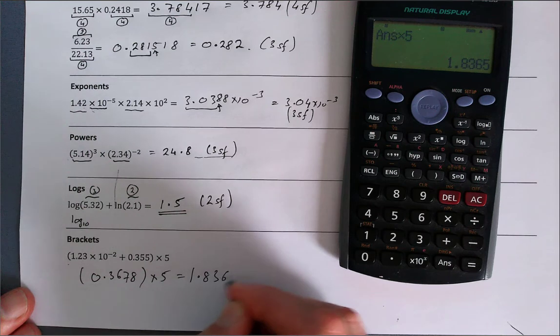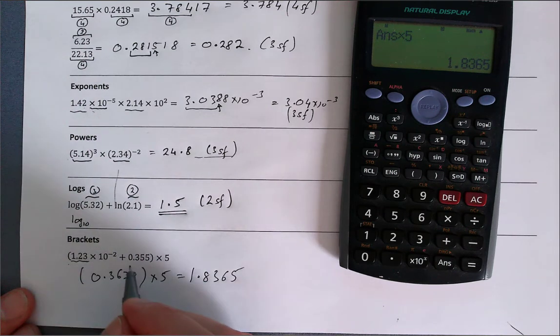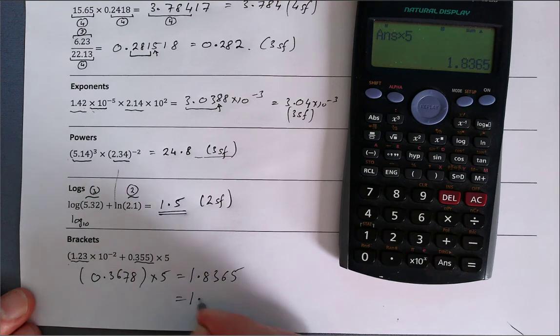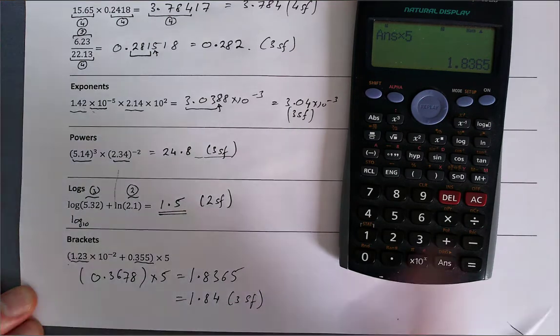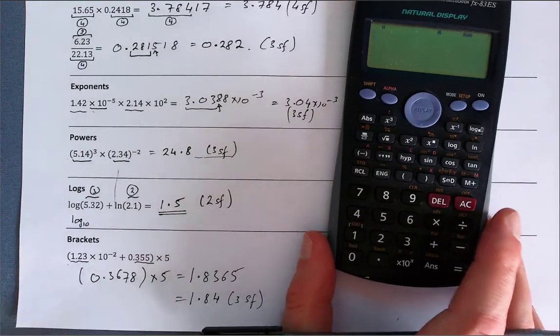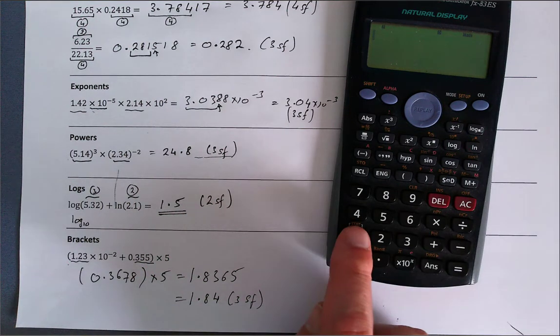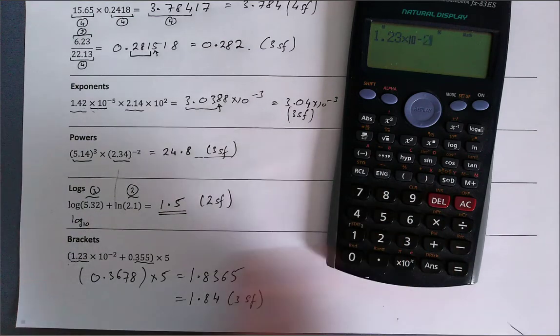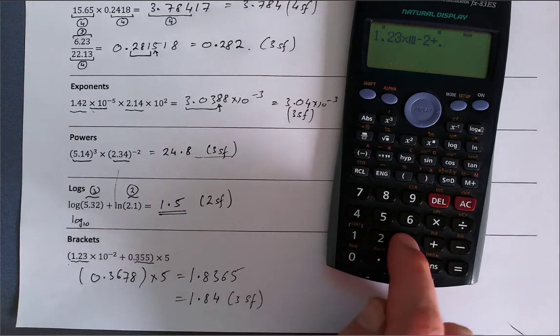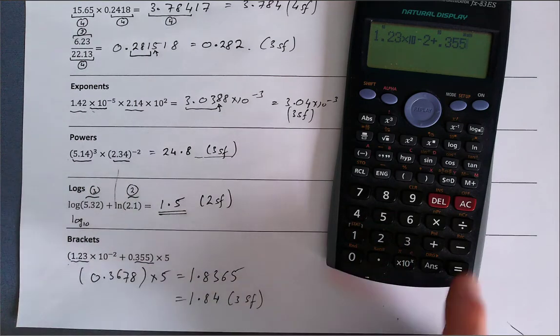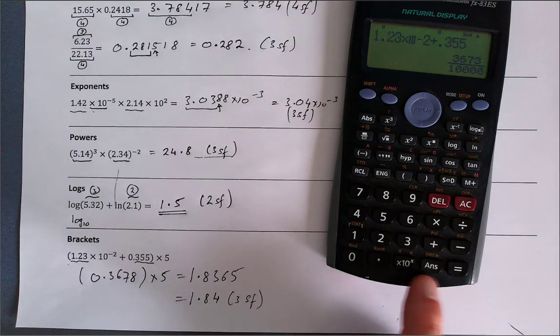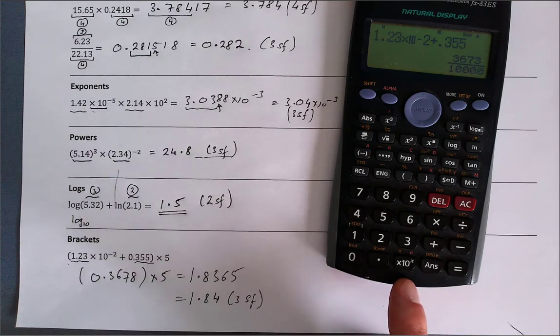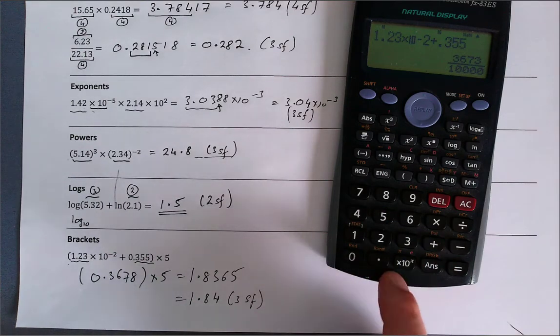Just to show you what you can do on the calculator, you can do two things. You can say 1.23 times 10 to the minus two, first bit, plus 0.355, second bit, equals. Okay, that's the last answer we have stored. So this will actually be, this number will be saved in the answer key. So if you need to recall that later, you can just do it. So I could go ahead and just multiply by five here, but just to show you the answer key, I'm going to say five multiplied by the last answer I computed, ANS, and it'll give me 1.84.